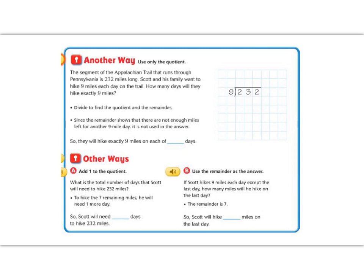Great job so far. Let's practice again with the another way problem. This one says we're going to use only the quotient. The segment of the Appalachian trails that runs through Pennsylvania is 232 miles long. Scott and his family want to hike 9 miles each day on the trail. How many days will they hike exactly 9 miles? If you remember my notes, this word exactly is important. It means that we're going to use only the quotient. No leftover pieces, which they told us that at the beginning.